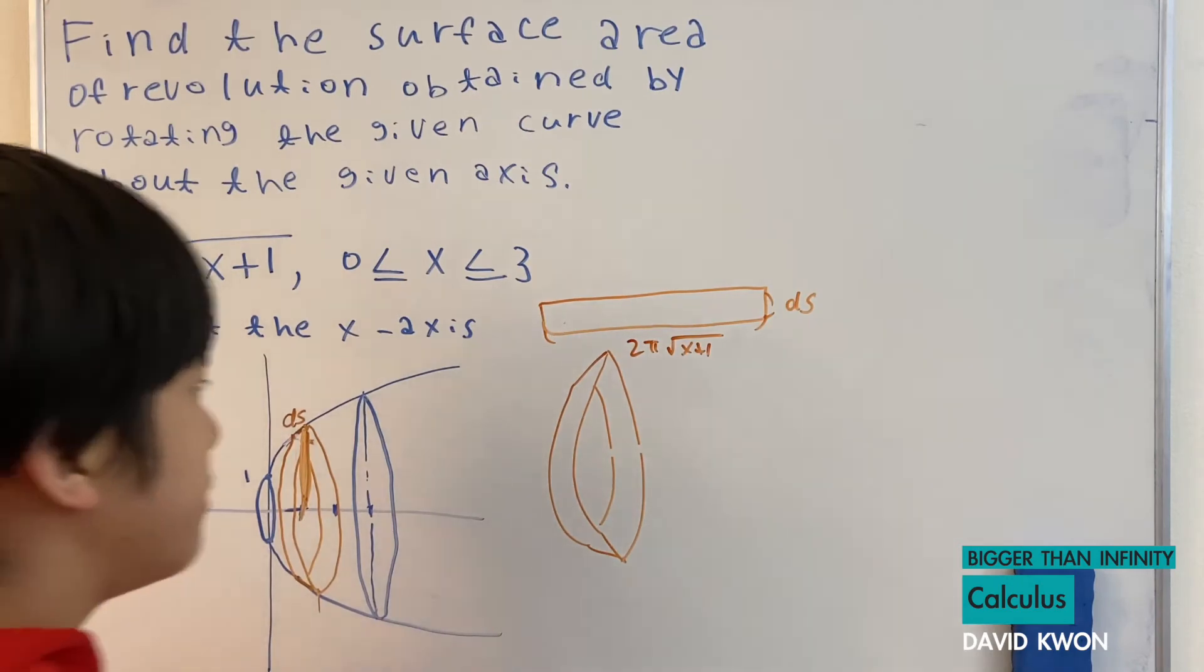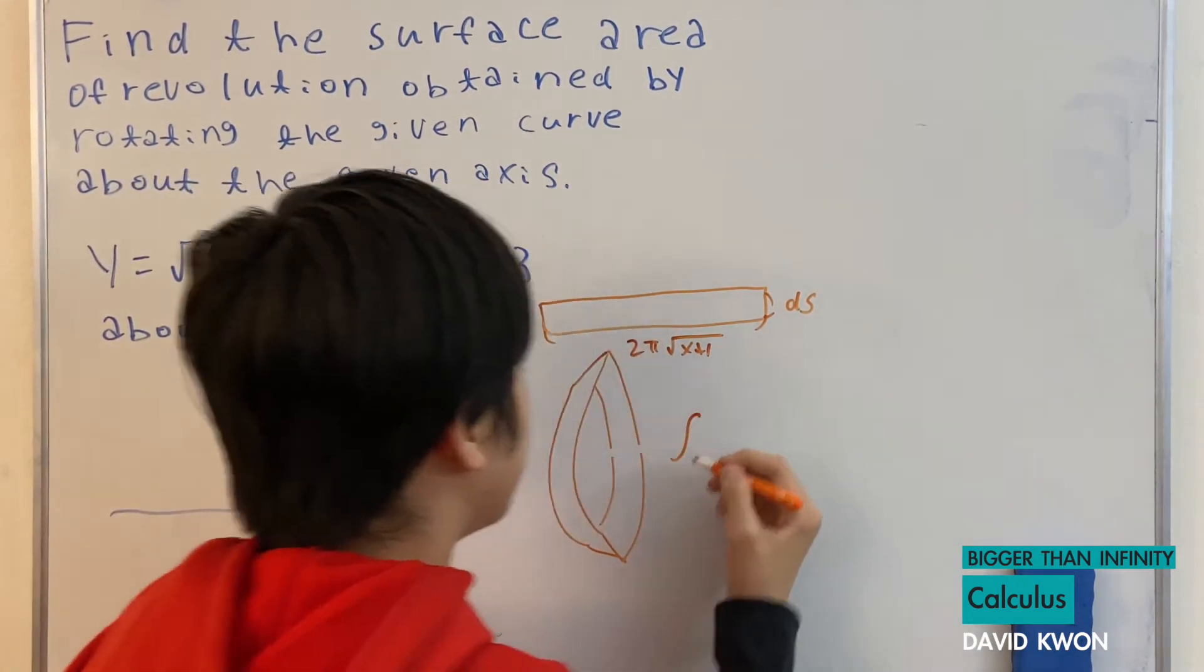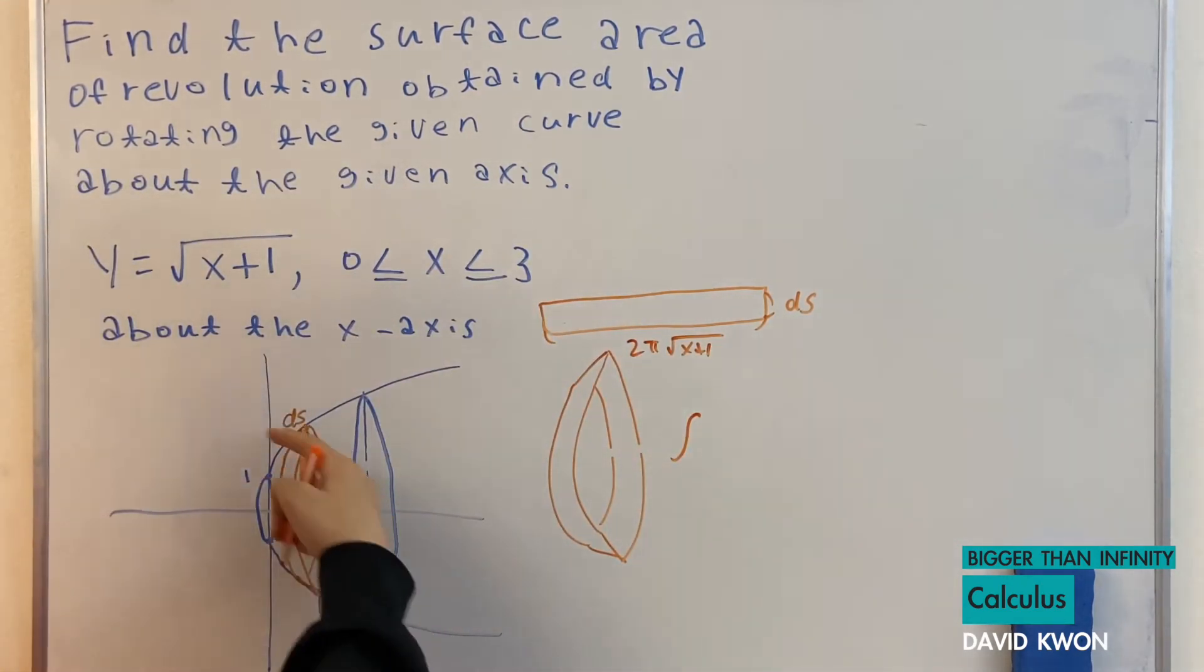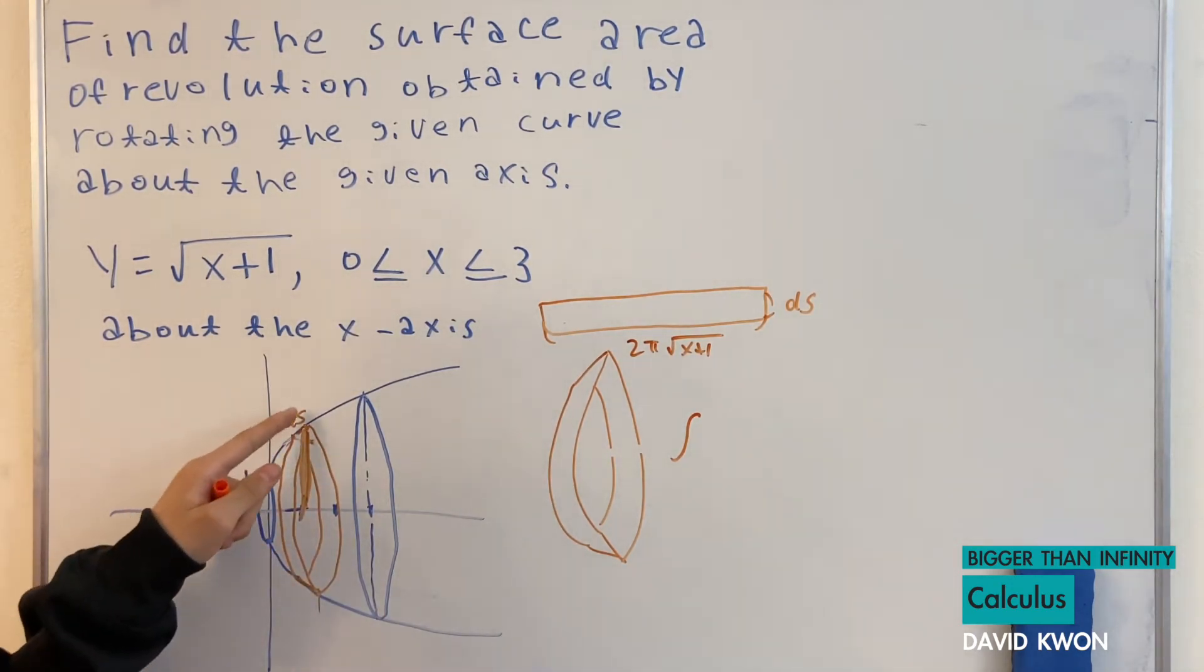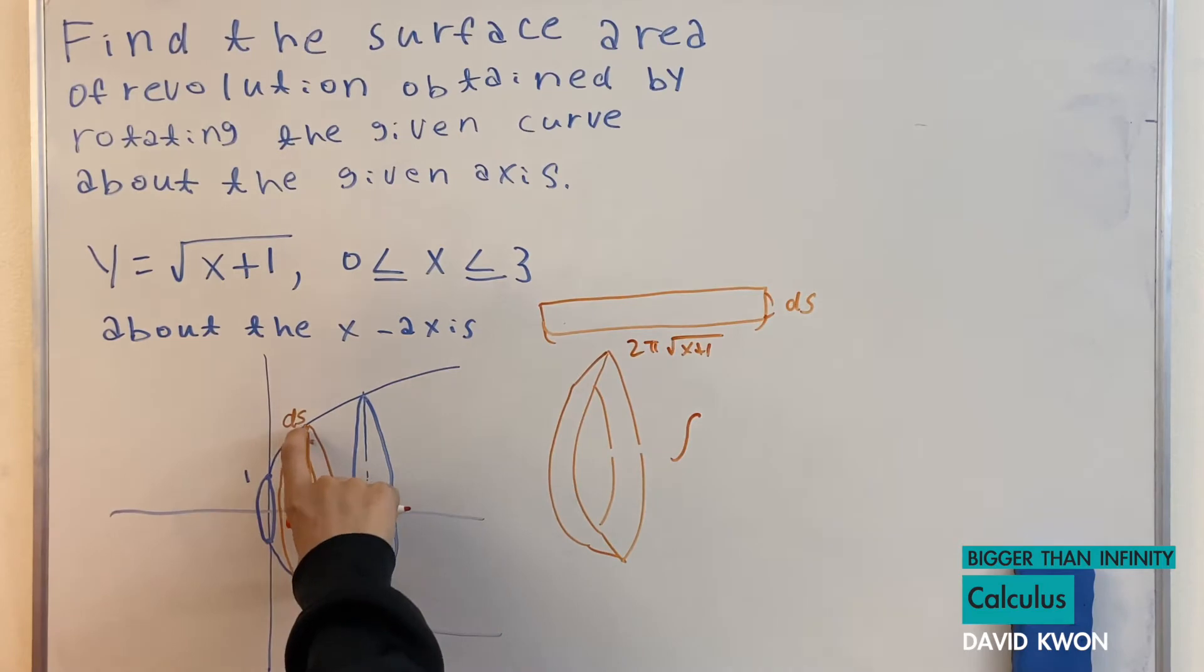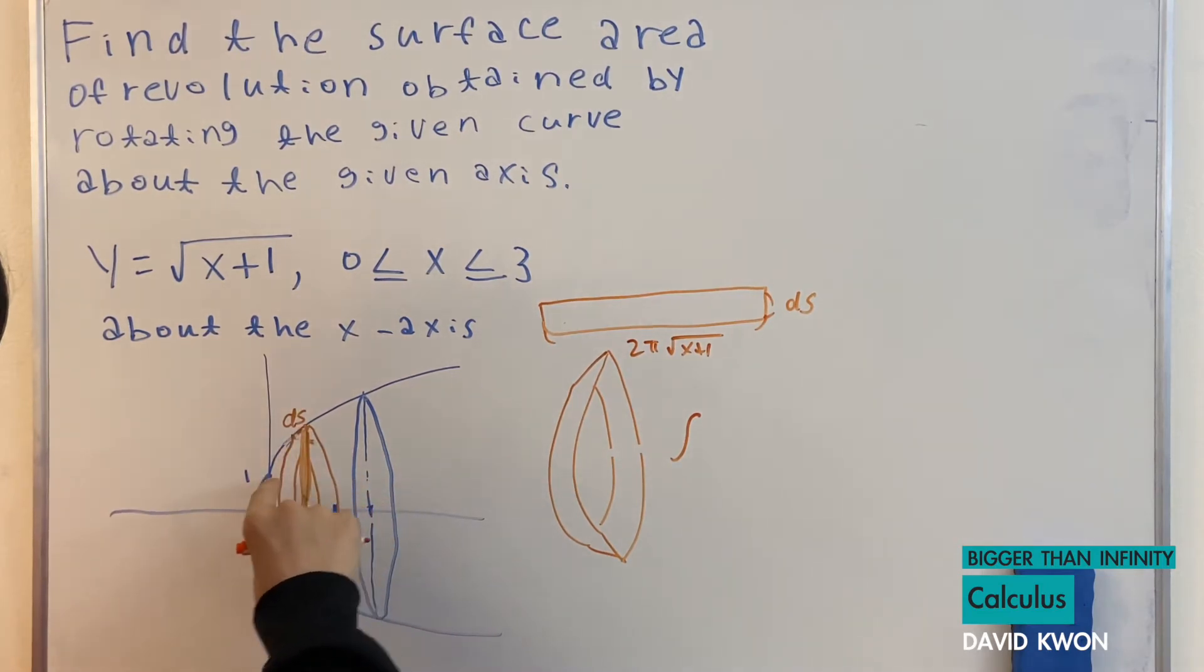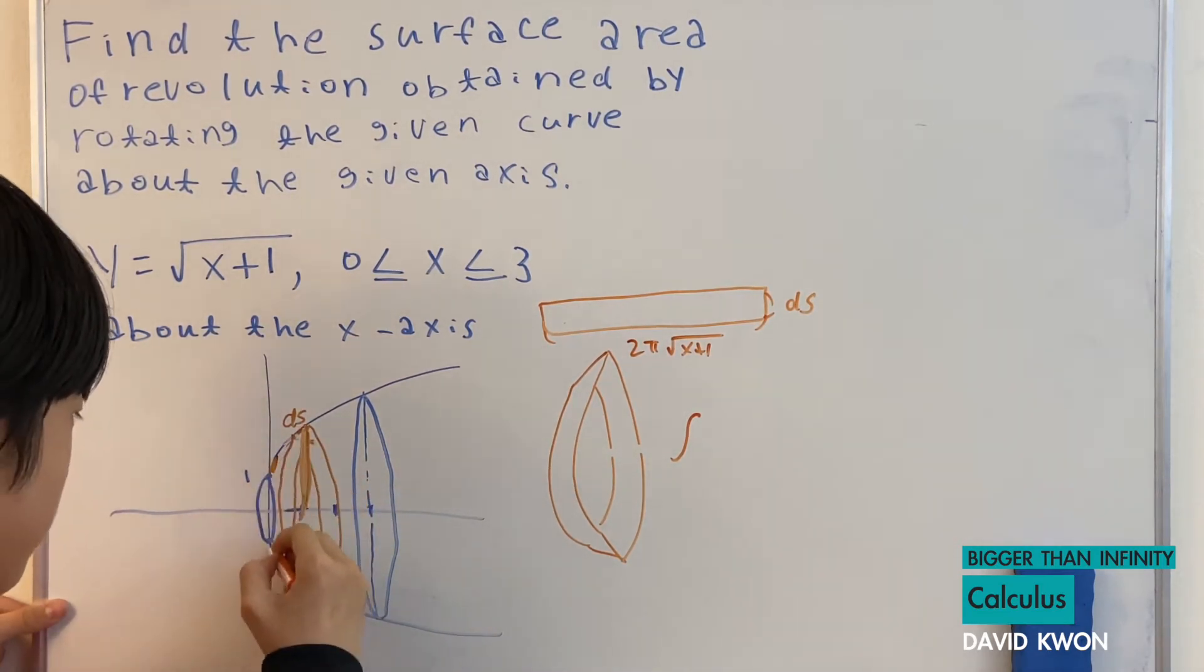That's useful because if we have infinitely many amount of this rubber band within ds, you know, this rubber band. If I have infinitely many of them, so maybe I have another rubber band right here.